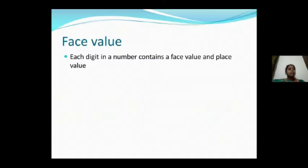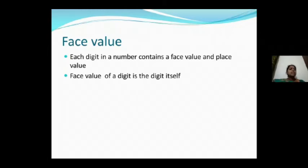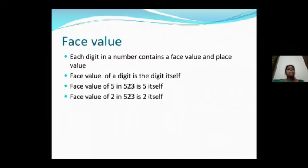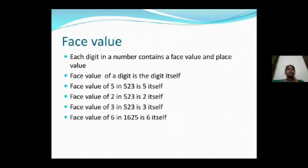Each and every digit has its own place value and face value. The face value of a digit is the digit itself — it remains the same. For example, in 523, the face value of 5 is 5, the face value of 2 is 2, and the face value of 3 is 3. The face value of 6 in 1625 is 6 itself.